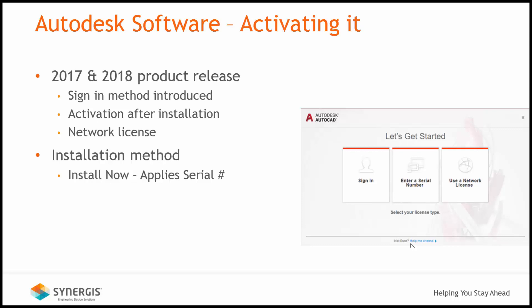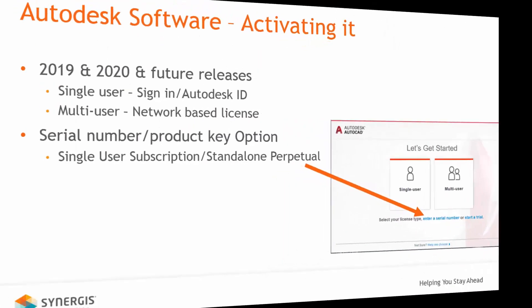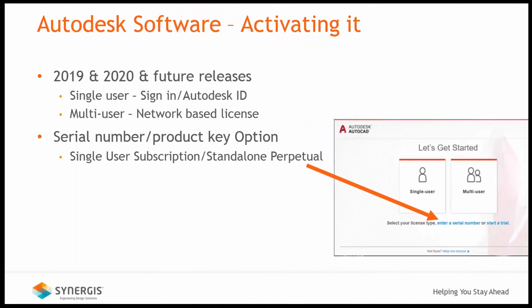For the 2019 and 2020 product release and possibly future releases, the focus is more on a single user sign-in method or multi-user or network based products. For those still using the serial number method as your activation, that option is located under two options as shown.